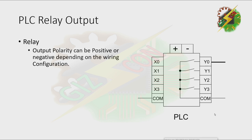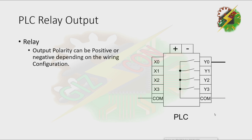For relay output, let's say we have a positive command. When the relay is activated, the current will enter the command and it will exit the PLC port — that makes our output positive. Next, let's say our command is negative. When the relay is activated, the current will enter the PLC port and it will exit the command — that will make Y0 negative.